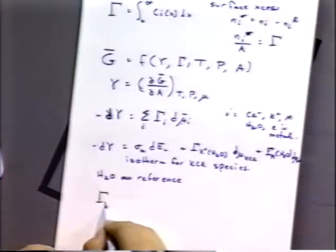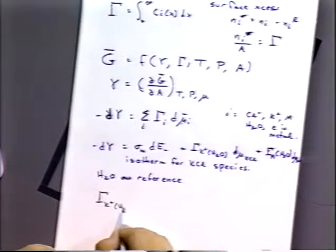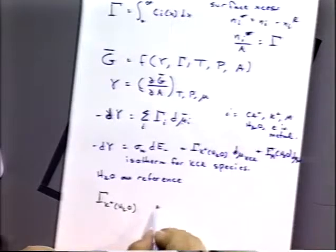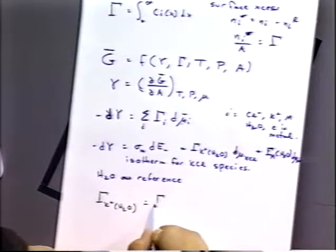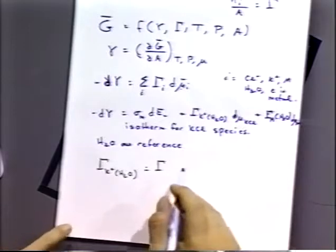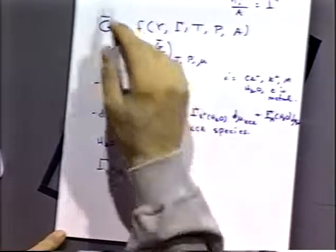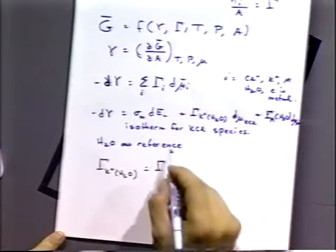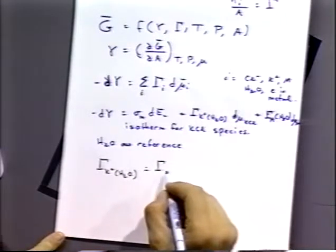This equation — describing the derivative of the surface tension versus these measurable quantities — is called the electrocapillary equation.